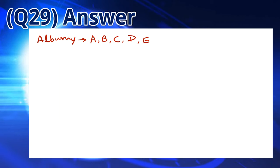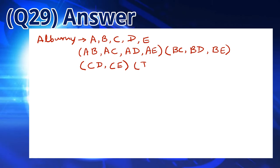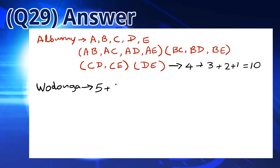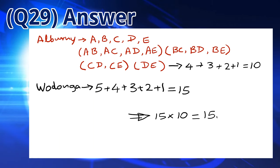Let the Albury sprinters be A, B, C, D, and E. We need to choose 2 of these and we have the following combinations: AB, AC, AD, AE, BC, BD, BE, CD, CE, and DE. This gives you a total of 10 combinations. In a similar way, we find that there are 5 plus 4 plus 3 plus 2 plus 1, which is 15 combinations for the Wodonga pair. Each of the 10 Albury combinations can be combined with each of the 15 Wodonga combinations. So we have 10 multiplied by 15, which is 150 ways to choose the team.